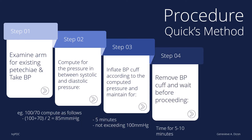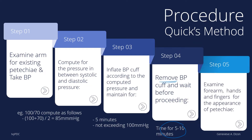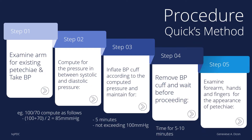For the next step, after 5 minutes, we remove the BP cuff and wait for 5 to 10 minutes. After waiting, we examine the forearm, the hands, and the fingers for the appearance of petechiae.